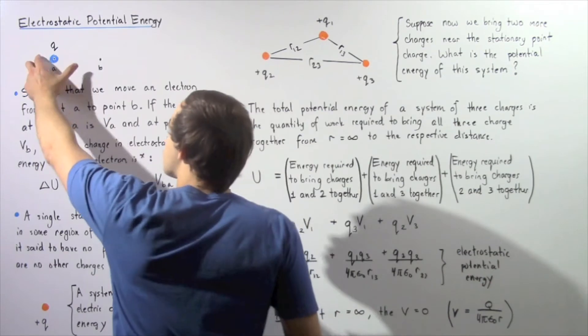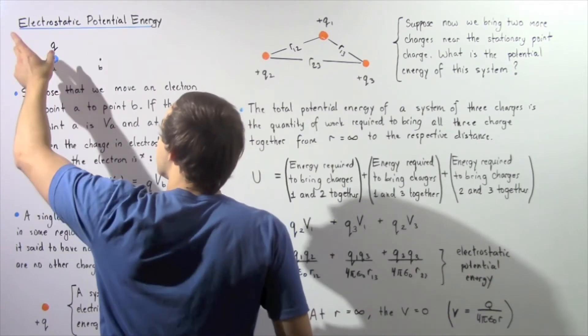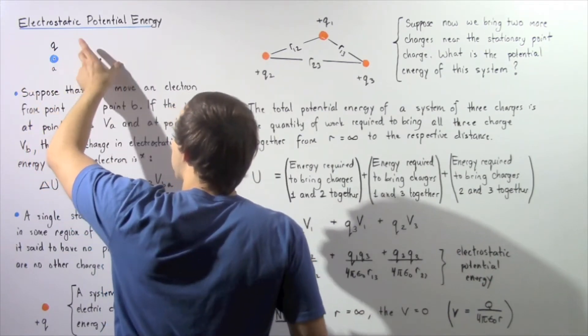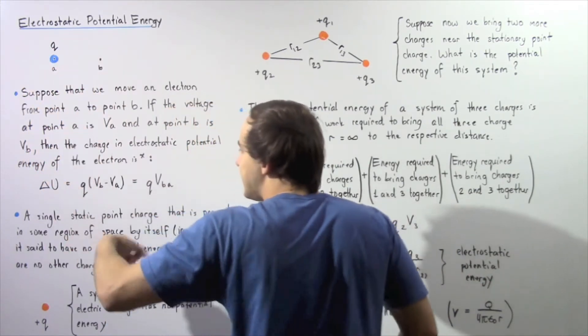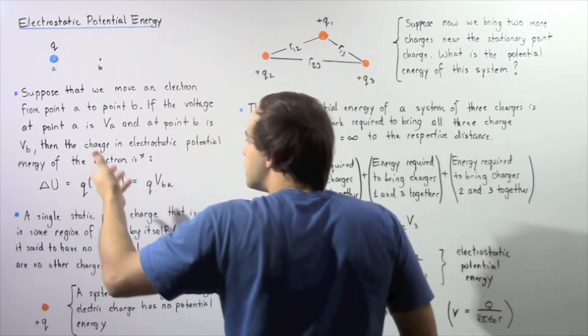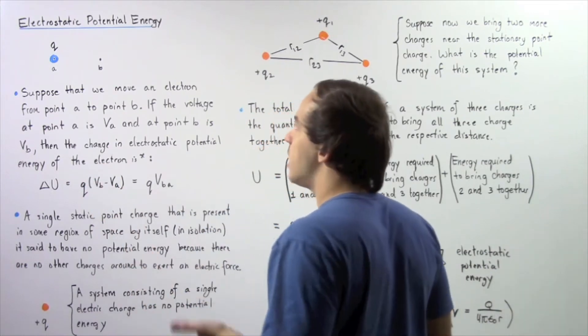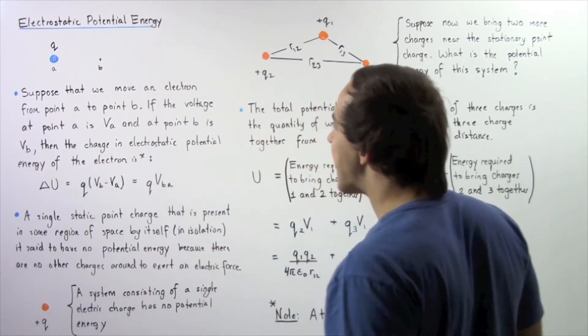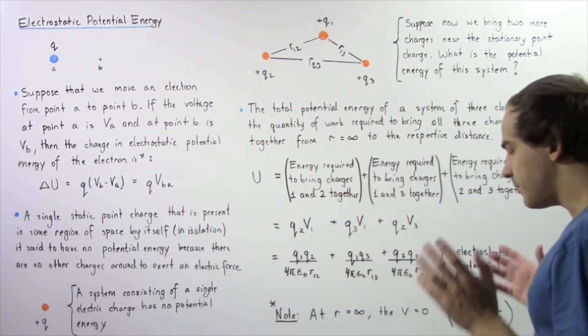So when our electron travels from point A to point B, it either gains or loses this quantity of electrostatic potential energy.